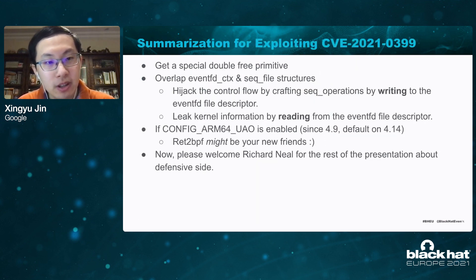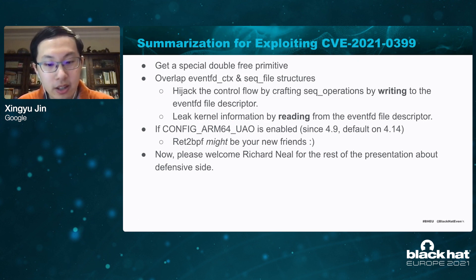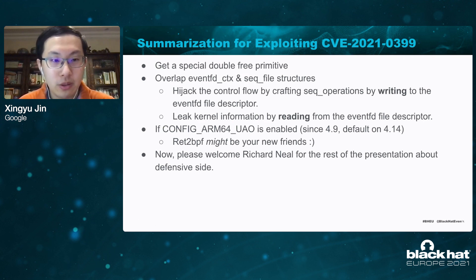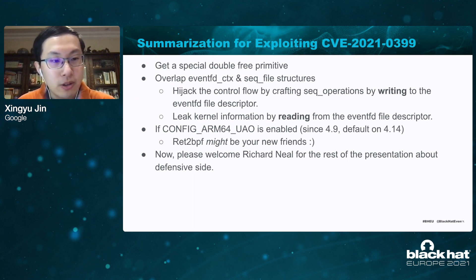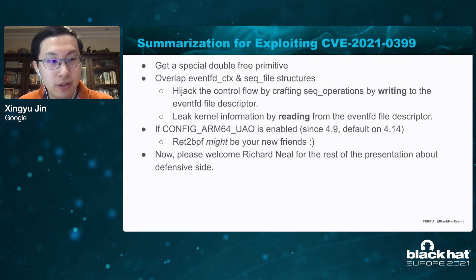The summary of exploiting CVE-2021-0399: first, we obtain a special kernel double free primitive. The overlapping eventfd and sequence file structures allow hijacking of the control flow by crafting a sequence operation via writing to the eventfd file descriptor. By reading the eventfd file descriptor, we can leak kernel information. If the user access override mitigation is enabled, return-to-BPF is our new friend. Now please welcome Richard Neal for the rest of the presentation about the defensive side.